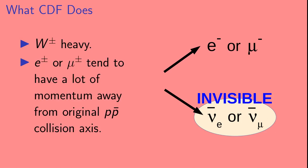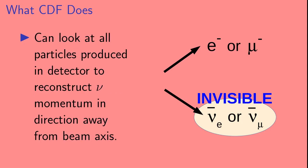Now the W is a heavy particle, much heavier than the electron or muon or their neutrinos. When the W decays, its decay products come out with a lot of momentum. As a result, the electron or muon tends to have a lot of momentum directed away from the direction of the incoming proton and anti-proton beams. As for the neutrino, it is possible to look at all of the particles produced in the detector and use conservation of momentum to reconstruct the neutrino momentum in the direction away from the axis of the proton-antiproton beams.